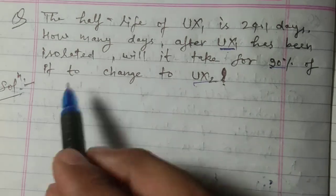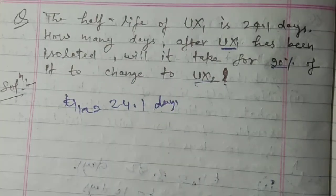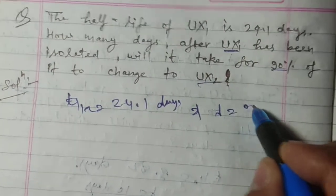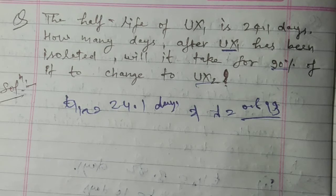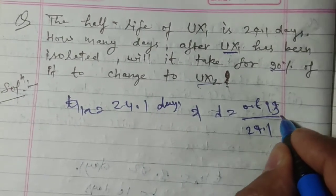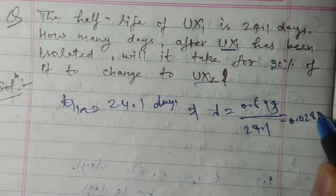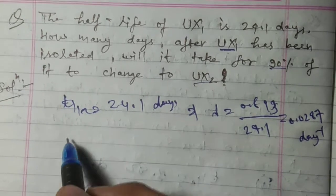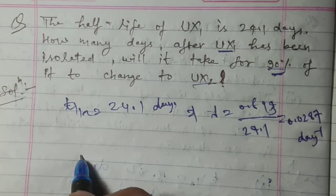So you are given t half is equal to 24.1 days, and this will give lambda equal to 0.693 upon 24.1, which is equal to 0.0287 day minus 1.